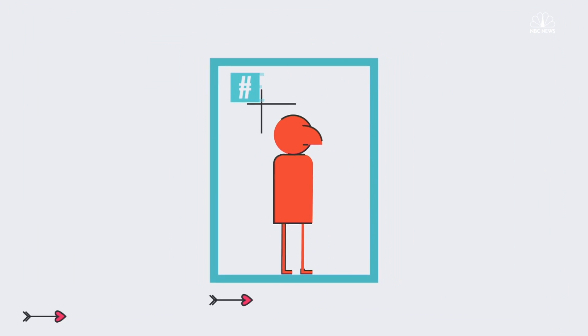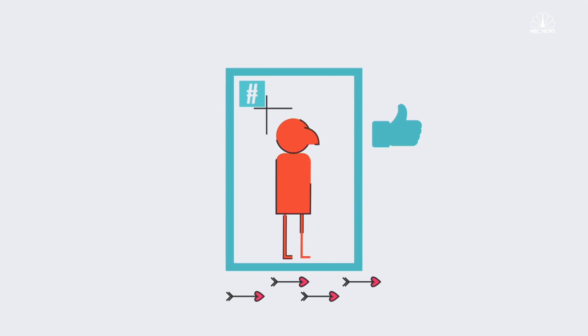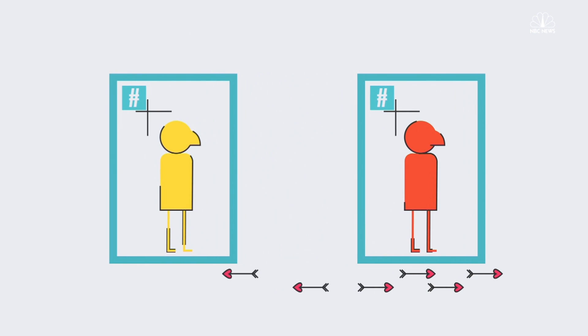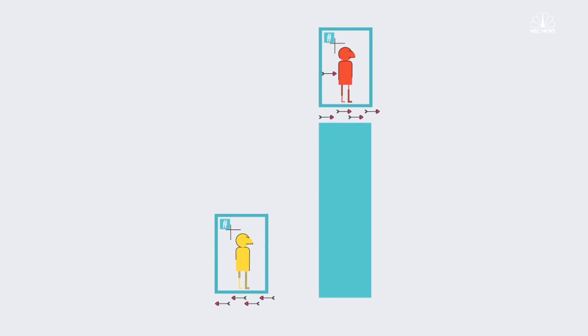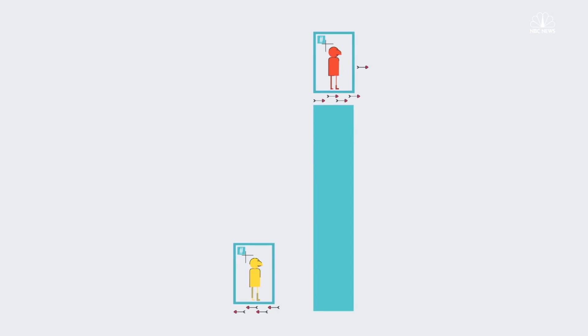If a lot of people swipe right on you, saying they like your profile and want to match with you, versus swiping left to skip to the next person, your score will go up. Each swipe is like a vote. This person is more desirable than that one.